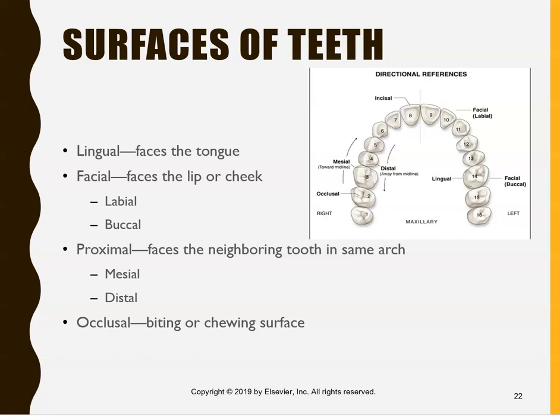You already know what 4-4 means because we looked at the FDI numbering system in the last video — 4-4 stands for quad 4, tooth number 4, a premolar on the lower. What we're going to look at now are the surfaces of the teeth. Sometimes you'll hear: lingual, facial, occlusal, mesial, distal — so what do they all mean?